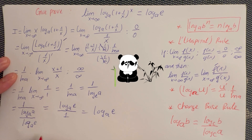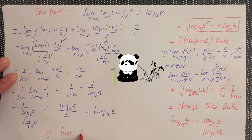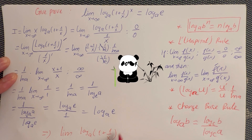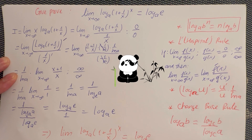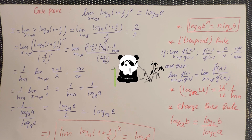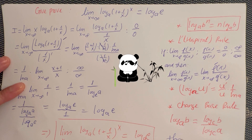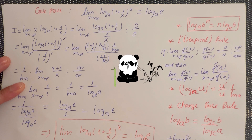So you can now write: the limit as x becomes infinity of log A of (1 plus 1 over x) to the power x equals log A of e. That's it! Thank you for watching, thank you very much. Hope you understand it. Have a great day, bye bye.